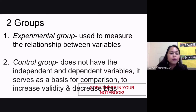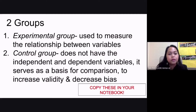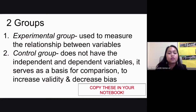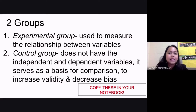The second group that you have is your control group. This does not have your independent variable and your dependent variable. It only serves as a basis for comparison. It is only used to increase the validity and, of course, to decrease bias in your experiment.